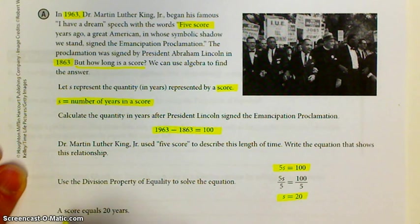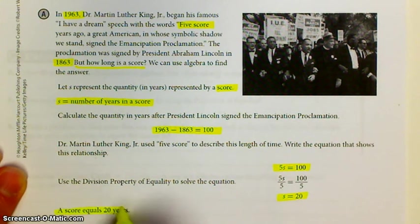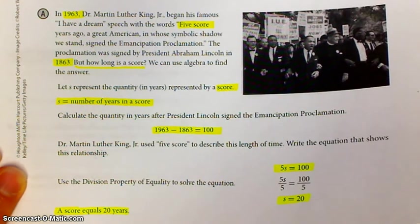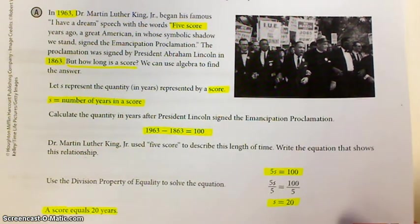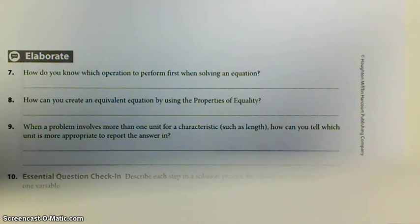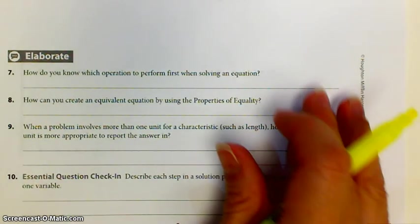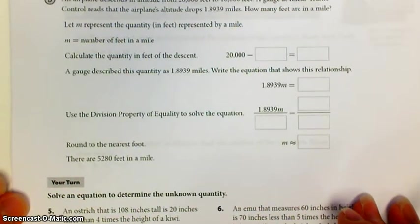Write a ratio of the man's shadow to the totem pole's shadow. Man's shadow, don't know, so we call it X. Totem pole's shadow, 45. So we have two ratios, and because we know that these are similar figures, we know that those two equal each other. We can write a proportion.